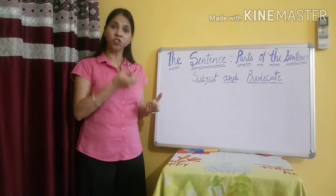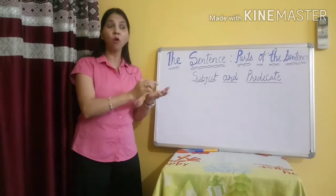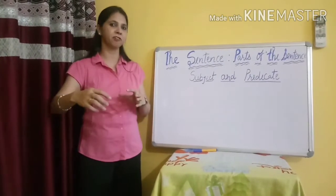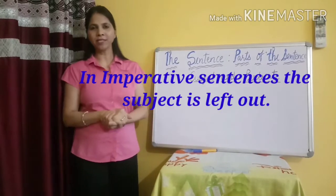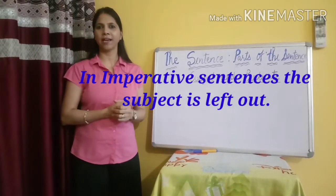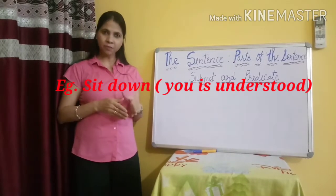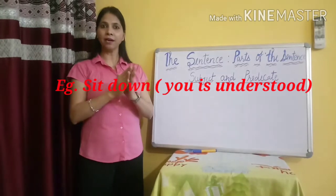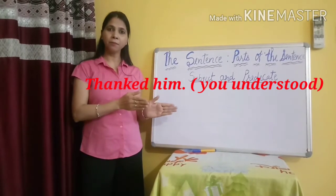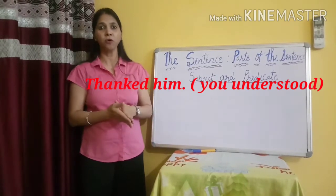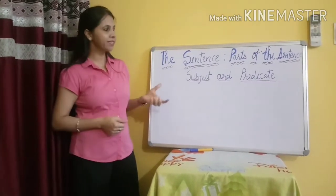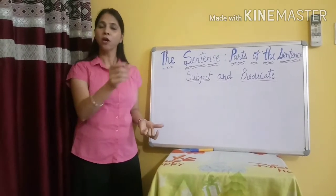The important thing is to find out what the sentence is about — who and what the sentence is about — that is the subject. Then the verb and all the remaining words that tell about the subject become our predicate. Second important thing: in imperative sentences — which are short phrases — the subject is understood. For example, 'Sit down' means 'You sit down.' The 'you' is understood and not mentioned. Similarly, 'Thank him' means 'You thank him.' Here 'you' is the hidden subject. So in imperative sentences, you have to assume and understand the subject.